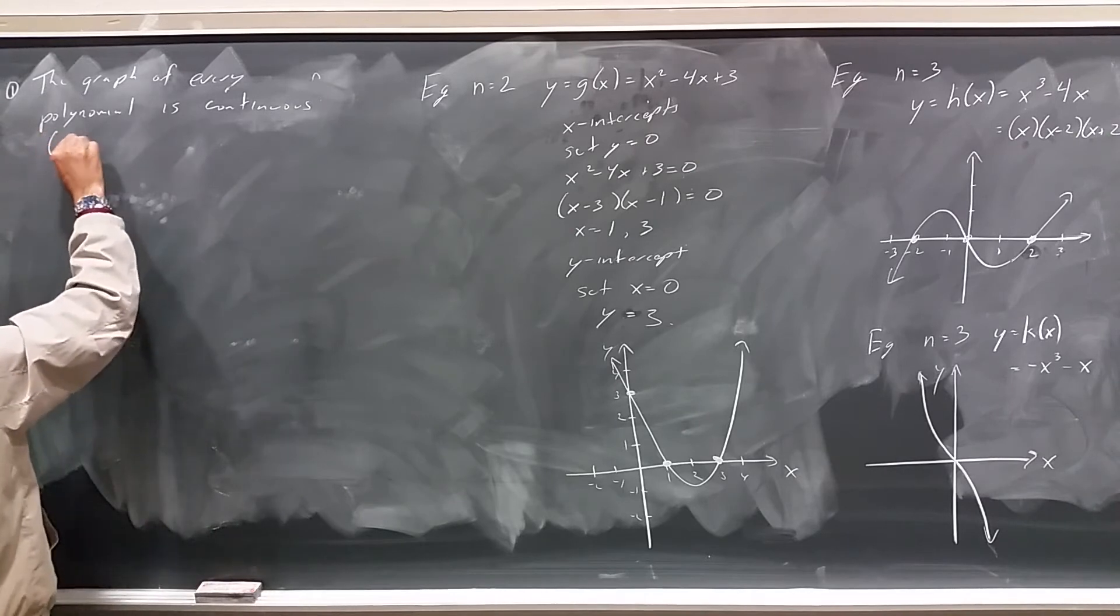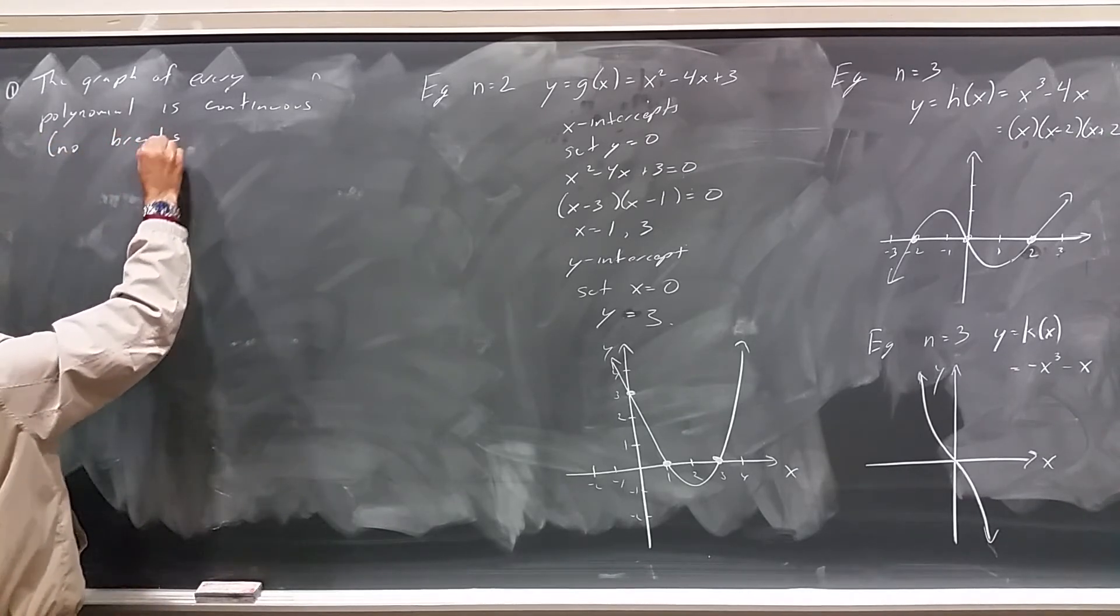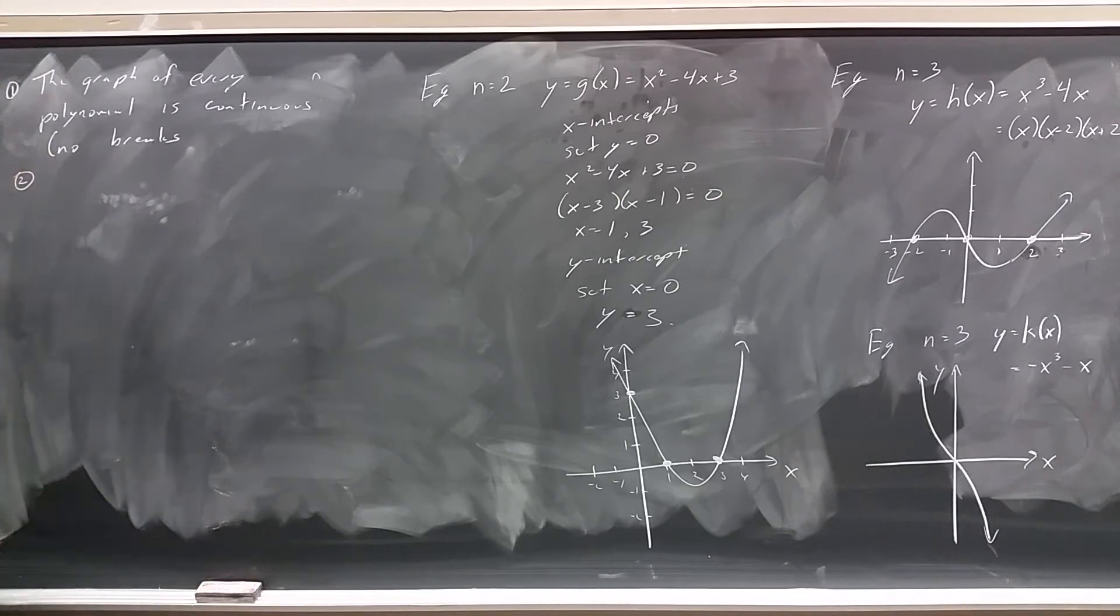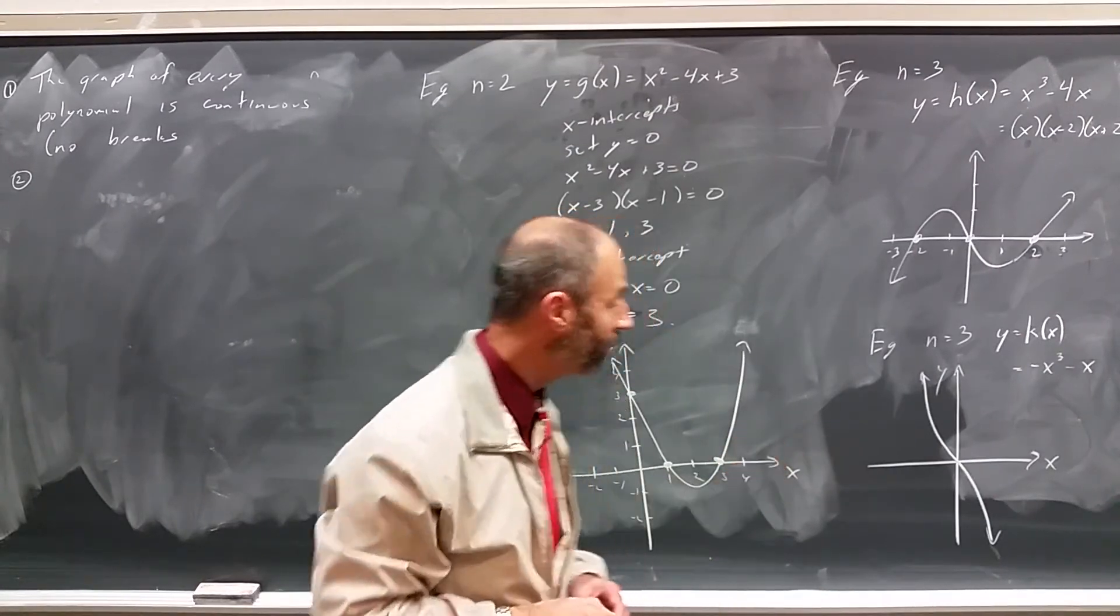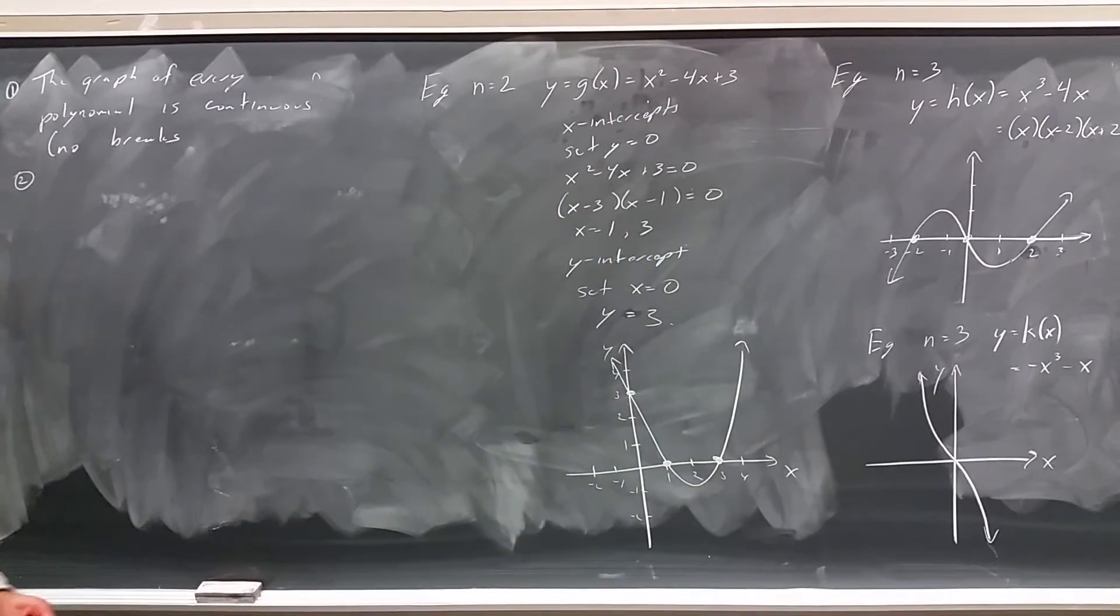Secondly, the graphs of all these polynomials are nice and smooth. They don't have any sharp corners like, say, absolute value of x.